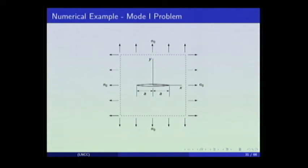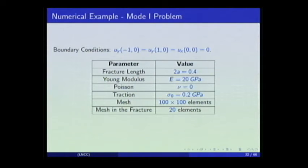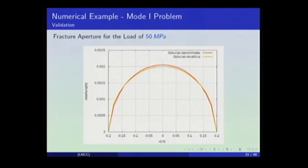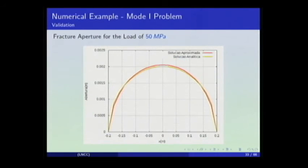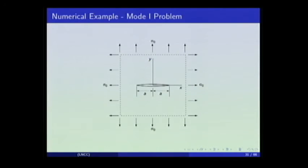The first numerical example is the Mode I problem: a plate with an internal fracture subjected to traction on every boundary. An analytical approximation exists due to Westergaard. We apply additional boundary conditions to ensure a unique solution and use those parameters. Comparing our solution with the analytical solution at different loads — 50, 100, and 200 megapascals — the results are essentially the same, confirming a good solution. In this case only mechanical behavior is tested; pressure is not included.